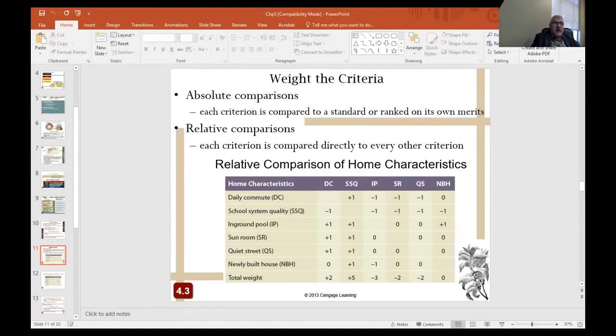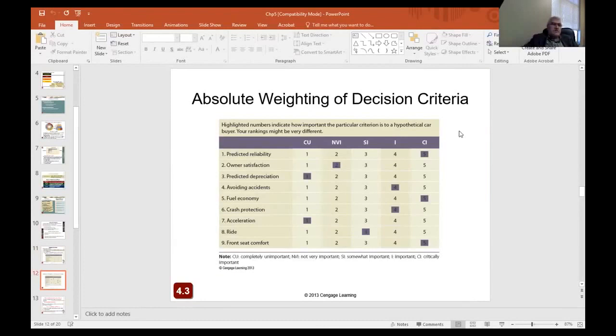For example, daily commute is important for a person who is planning to purchase a house. And the other criteria, the characteristics of the home, the age of the building, quiet street, school system quality, you add them up to see which one is more important. According to this slide, daily commute, in-ground pool, sunroom, quiet street, newly built house, etc. And then the total is five.